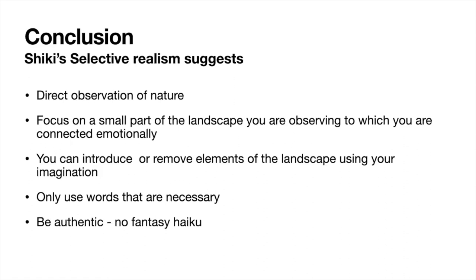So what guidance can I give you with regard to Shiki's principles of haiku? Your haiku should be a direct observation of nature. Focus on a small part of the landscape to which you're emotionally connected. Remember you can introduce or remove elements of the landscape using your imagination. To create an emotional connection between yourself, the scene, and your reader, only use words that are necessary — go back and look at your work, cut, rearrange, or change words, and don't overuse the adjective. And I'll stress just once more: be authentic. No writing of fantasy haiku. Thanks very much for listening — I hope you'll find this is a technique you can enjoy using.